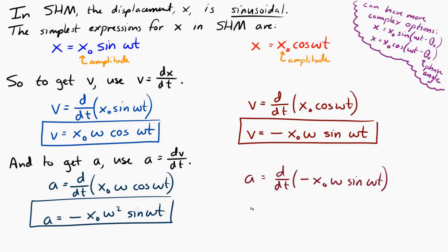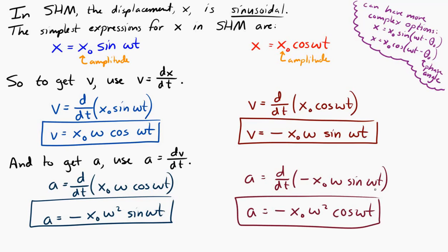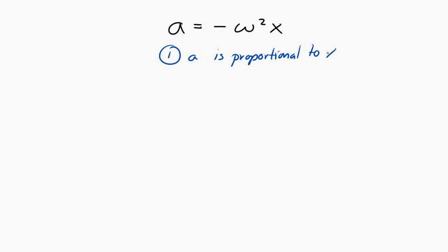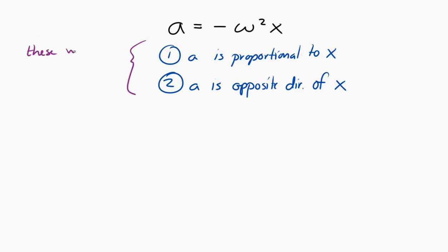Either way, you can see that the acceleration is equal to negative omega squared times x. That is always true in simple harmonic motion. In fact, that is called the governing equation of simple harmonic motion. It contains the idea that acceleration is proportional to the displacement, and also that acceleration is in the opposite direction of the displacement. That was the original condition for simple harmonic motion to occur, and here we see it again in the governing equation.